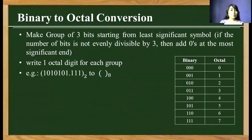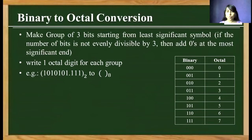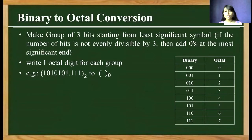For example, we have the binary pattern 1010101.11. We want to convert this binary number into an octal number, so we have to write a 3-bit binary equivalent to 1 octal number. A table shows that for every 3 bits of binary there is 1 octal number — for example, 000 binary equals octal 0, 001 equals octal 1, and 010 equals octal 2.